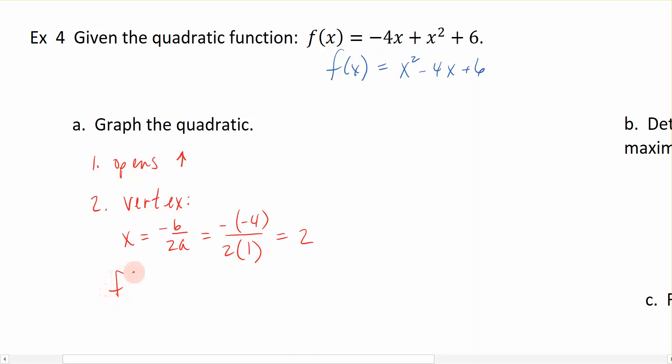Now we evaluate the function at 2. So in other words, we have 2² - 4(2) + 6, and we find that we get the value of 2. So I know that my vertex is occurring at (2, 2), and it opens up.